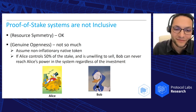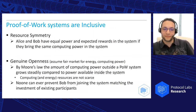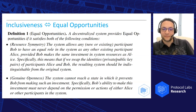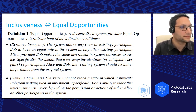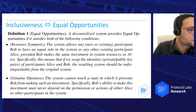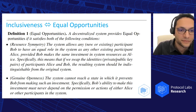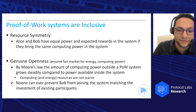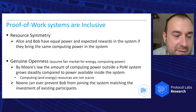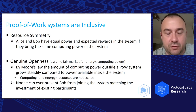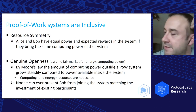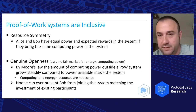Follow-up question: What about resource symmetry in proof of work? Energy prices are very different in certain regions, so investing the same money won't yield the same result. Also, someone who bought hardware when GPU prices were lower had to invest significantly less than someone buying now. — Absolutely right. I did have a disclaimer assuming a fair market for energy and computing power, just to make the argument. Of course, there are different ingredients to the game, and I completely agree these are valid points.